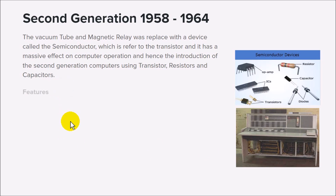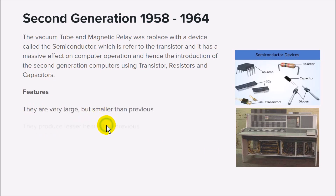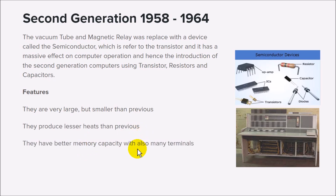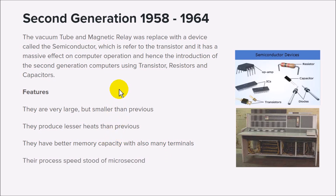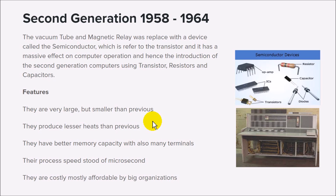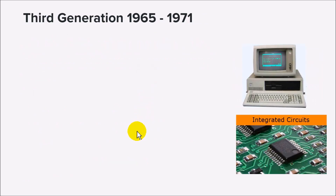This change made computers much more portable — more like a cupboard size. The major features of the second generation are that they are large but smaller than the first generation, they produce less heat than their predecessors, they have better memory capacity, and their processor speed is slower but better than the previous generation. They were also very costly, and only organizations and institutions could afford computers at that time.